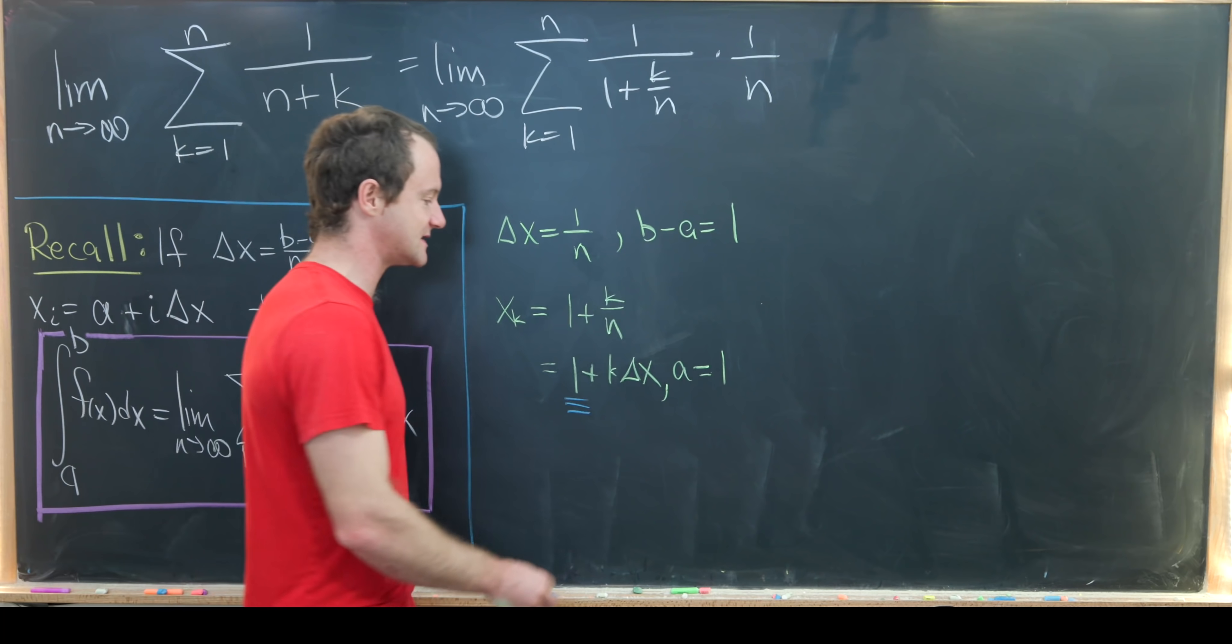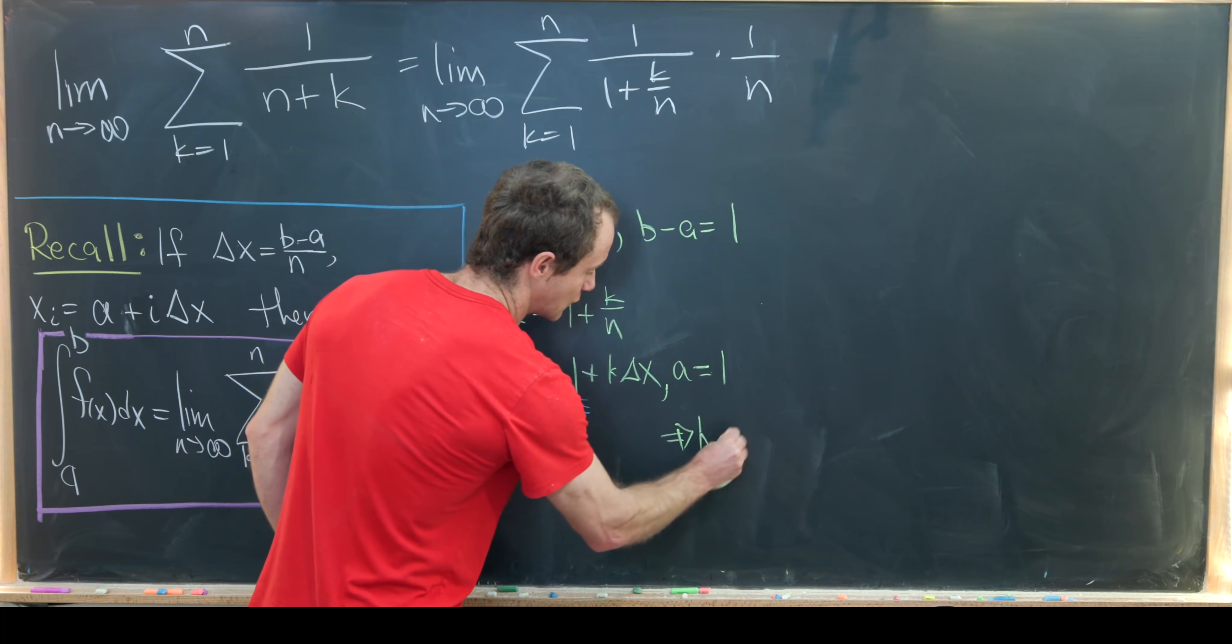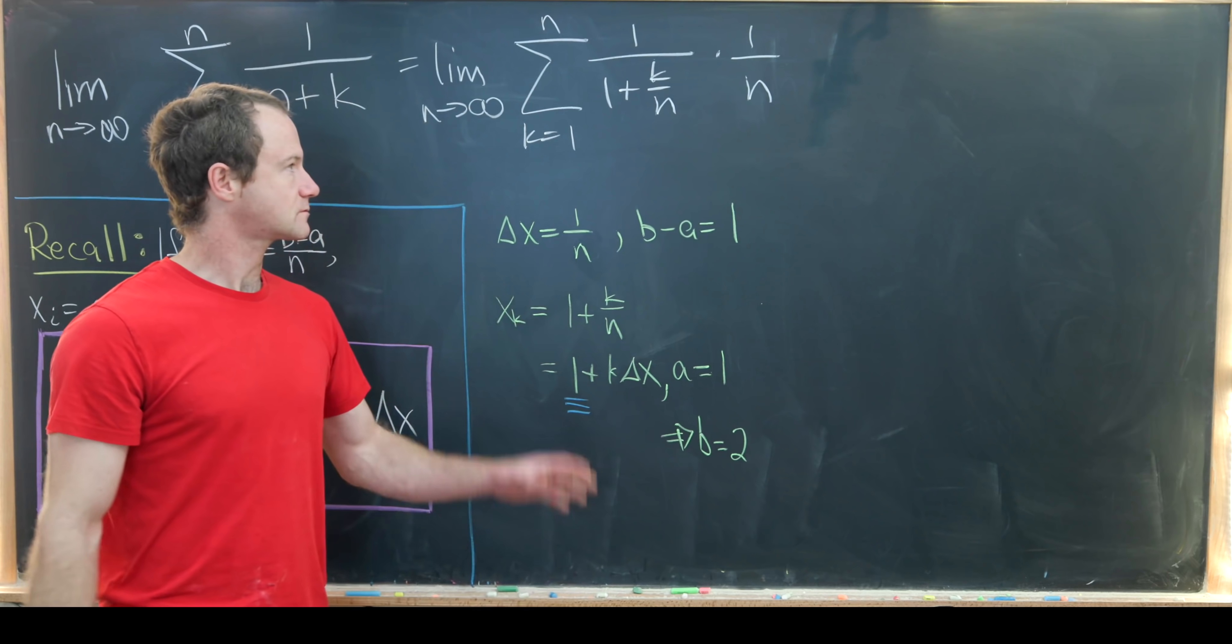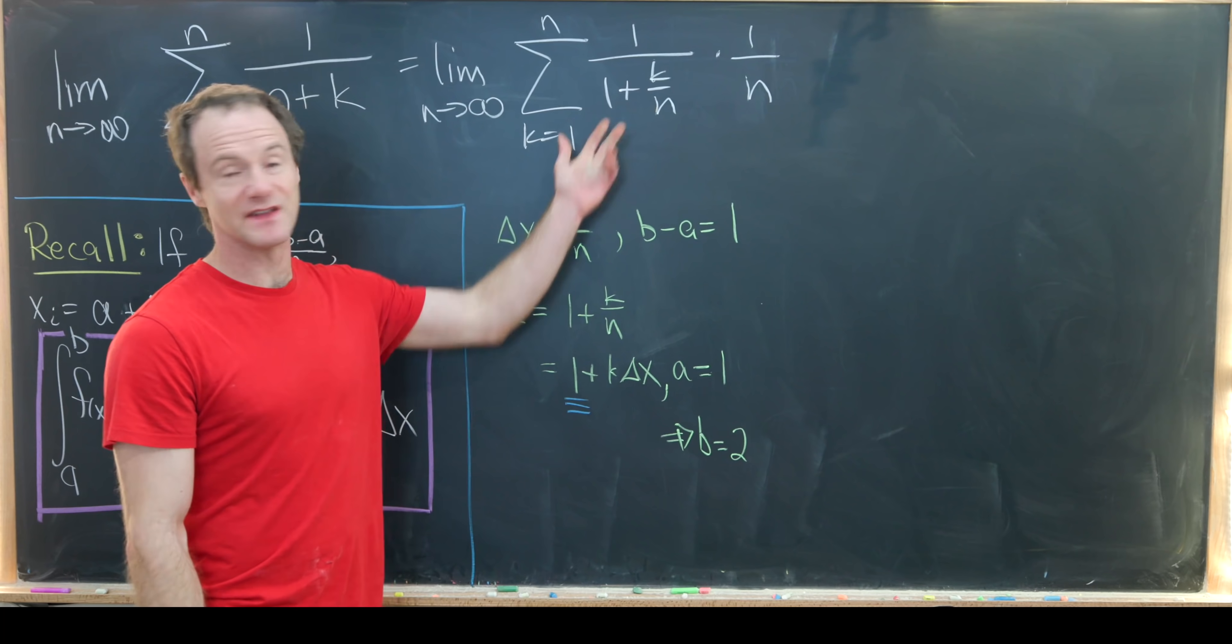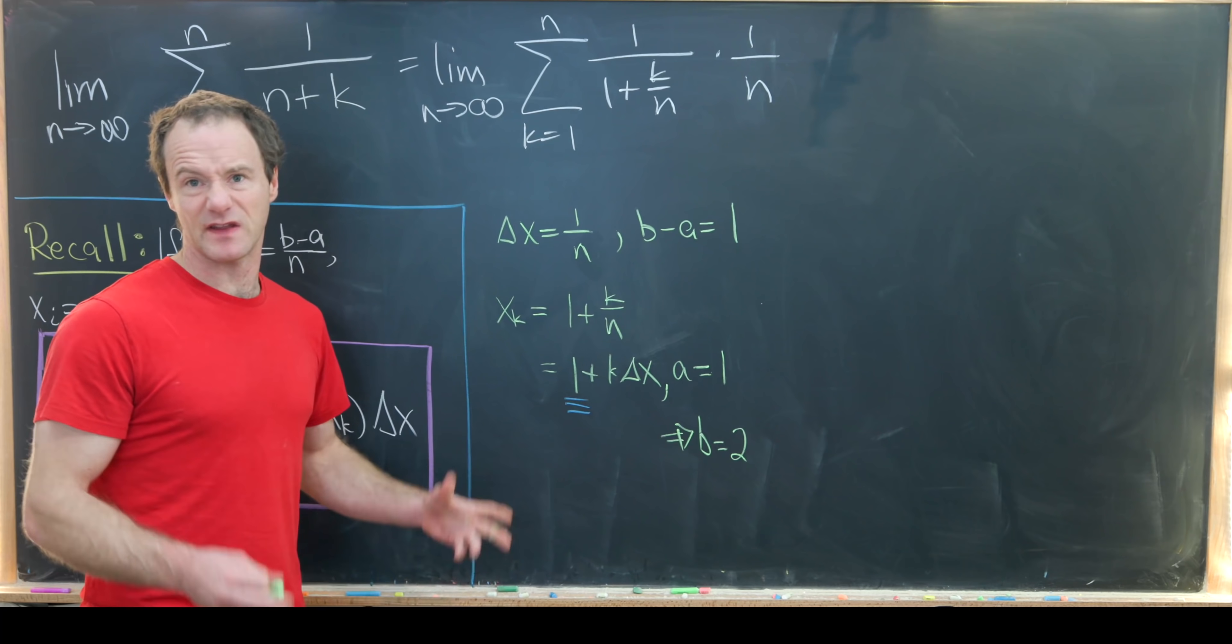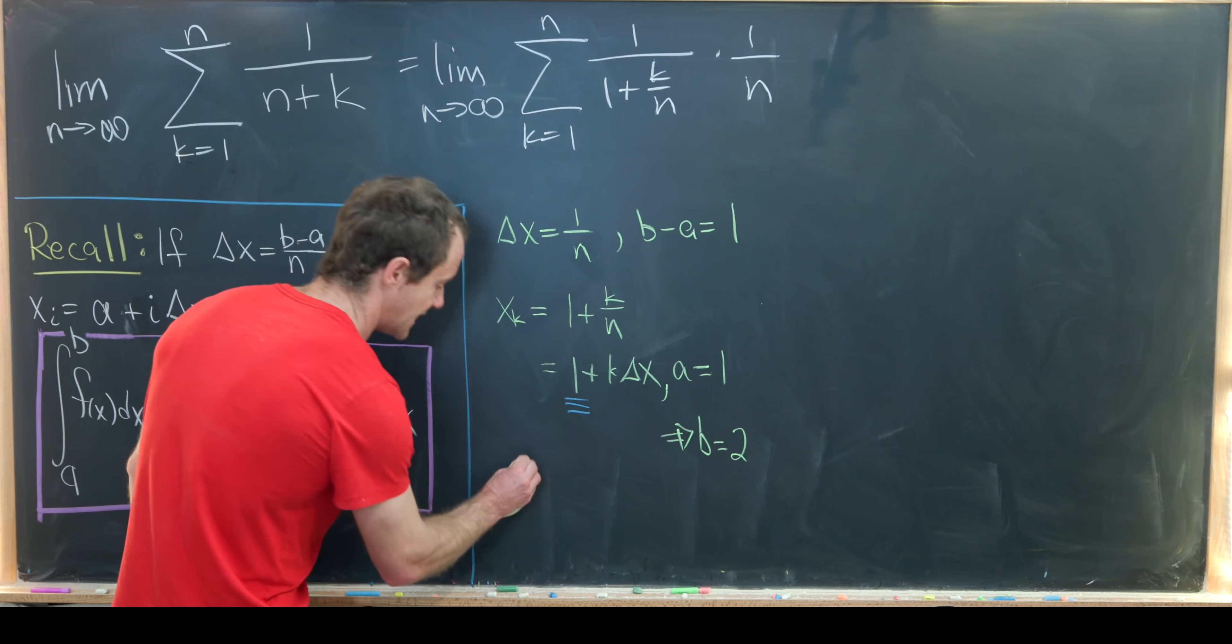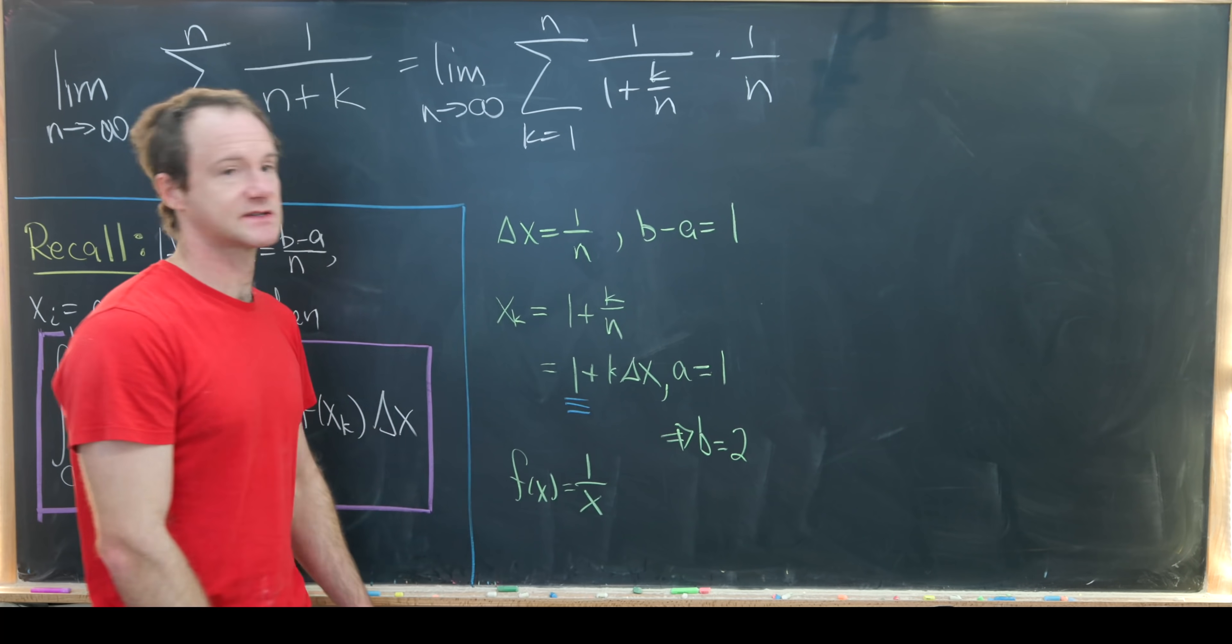But if a is 1 and b minus a is 1, that tells us that b is equal to 2. Furthermore, what's our function? Well we've got x_k that's in the denominator here. If x_k is in the denominator and that's all that's going on here, then our function seems to be 1 over x.